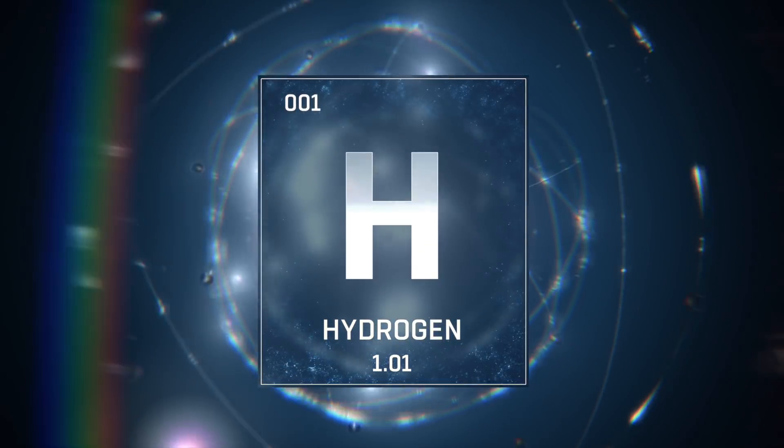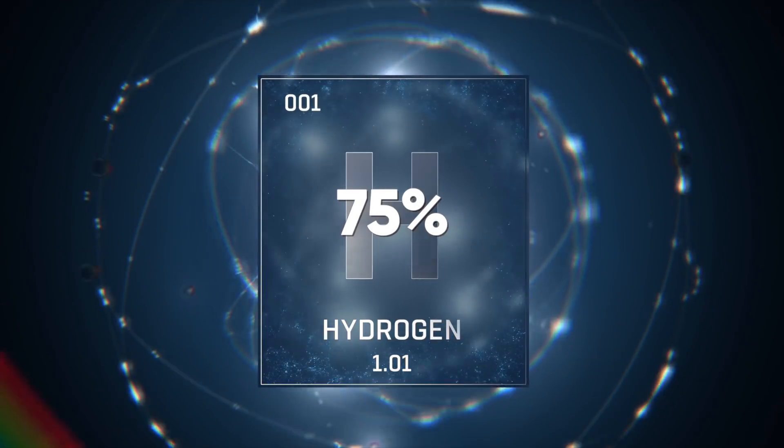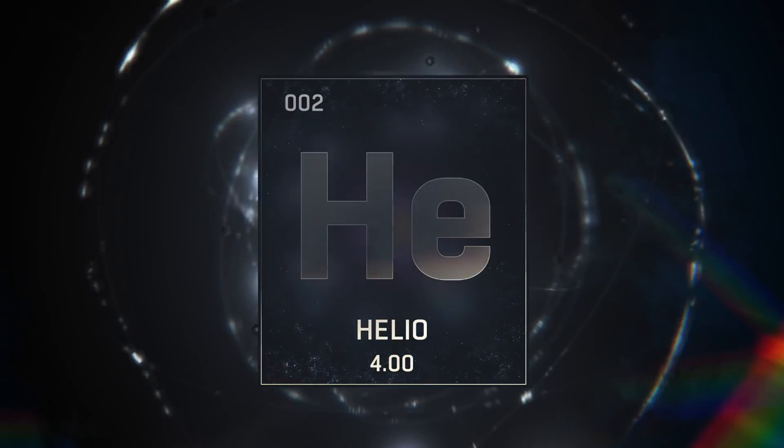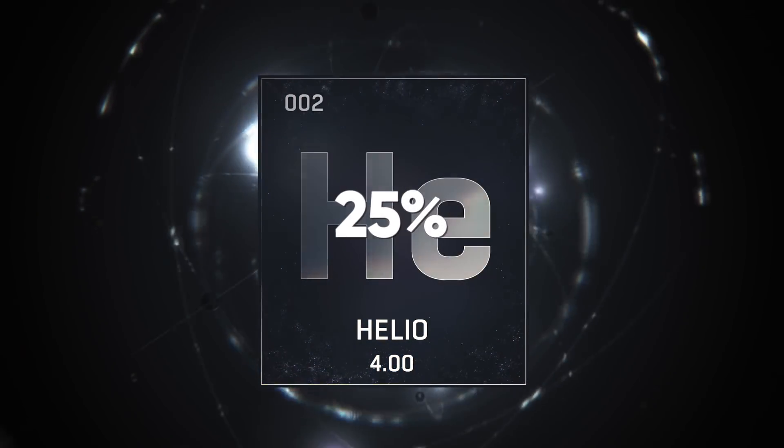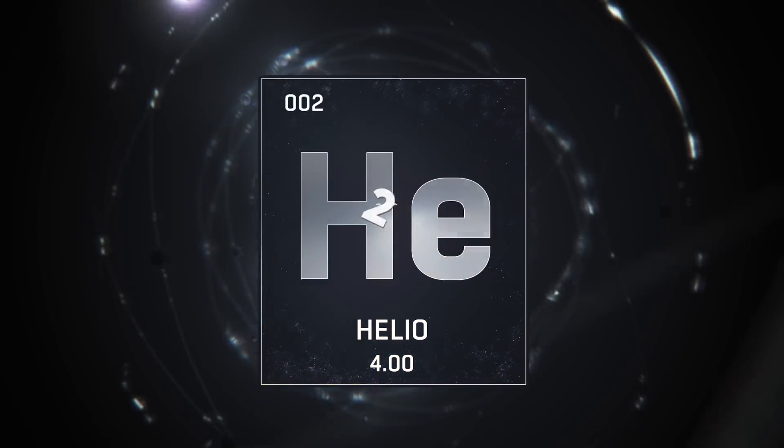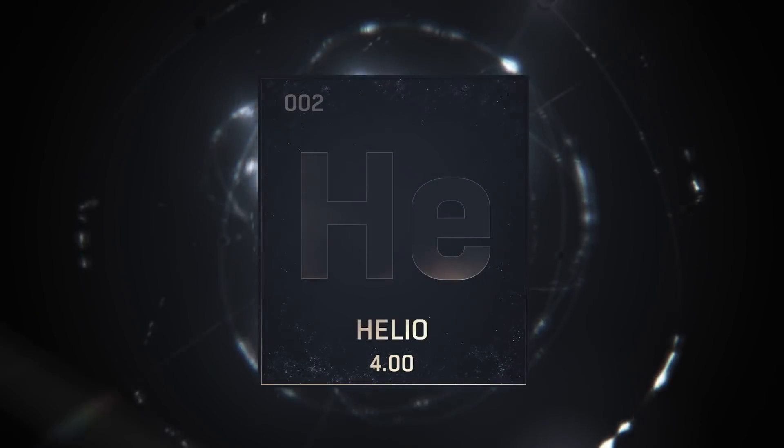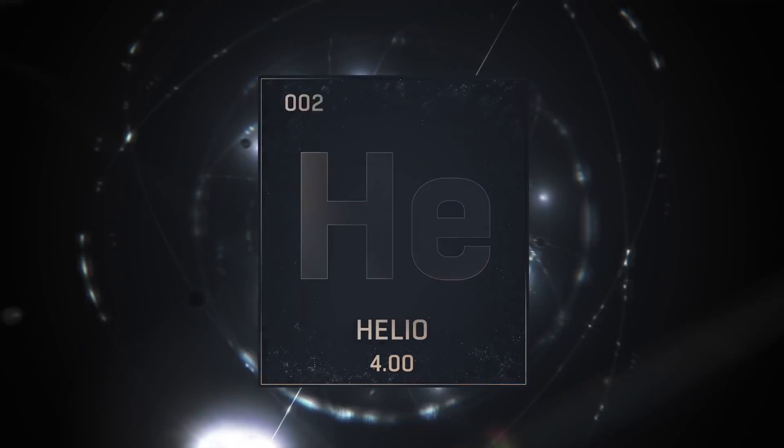By mass, hydrogen was 75% of the early universe's matter and helium was 25%. The abundance of helium is a key prediction of Big Bang Theory, and it's been confirmed by scientific observations.